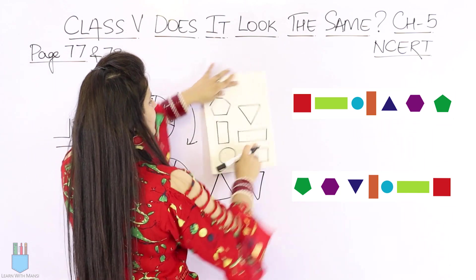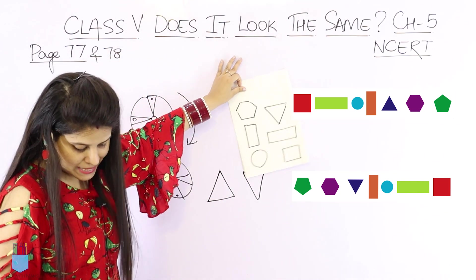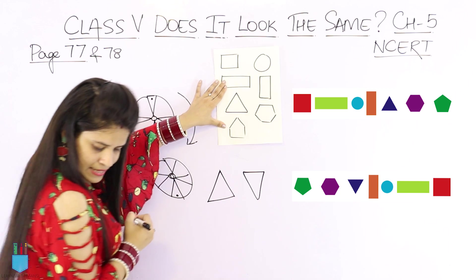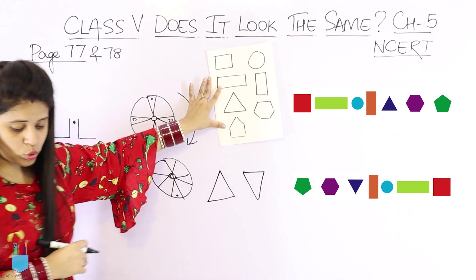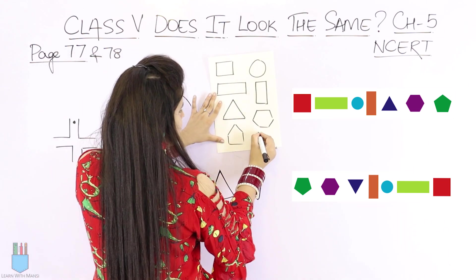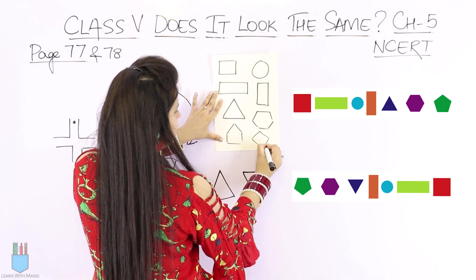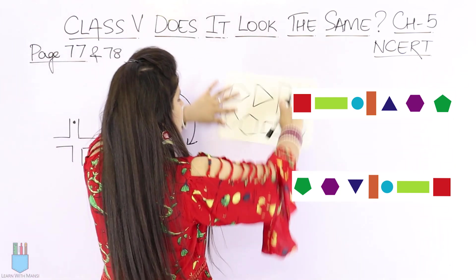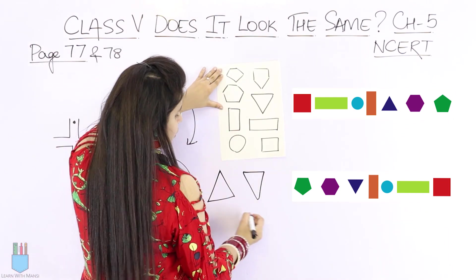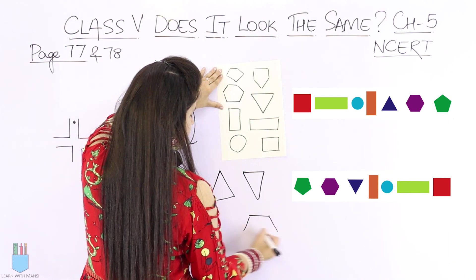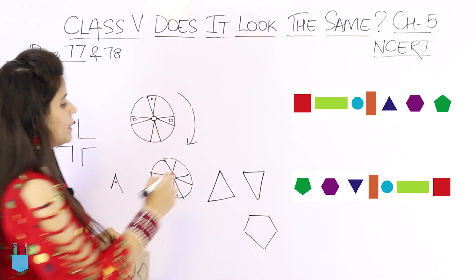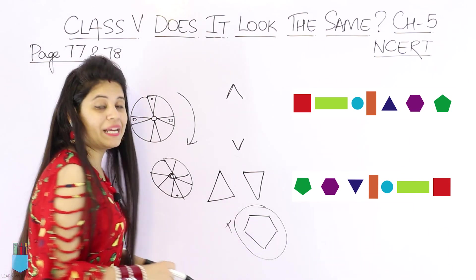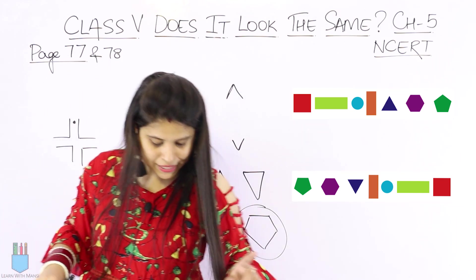After a half turn of the triangle, what you will notice is that the shape looks the same again. Next, there is a pentagon. After a half turn of the pentagon, what you will notice is that the triangle on the top is now pointing the opposite way — so the shape is not the same after a half turn. So we will cross it out.